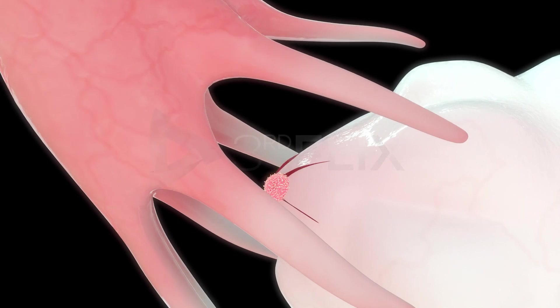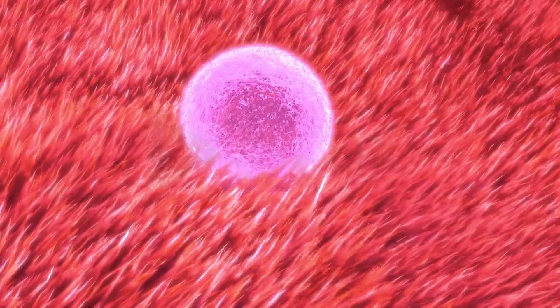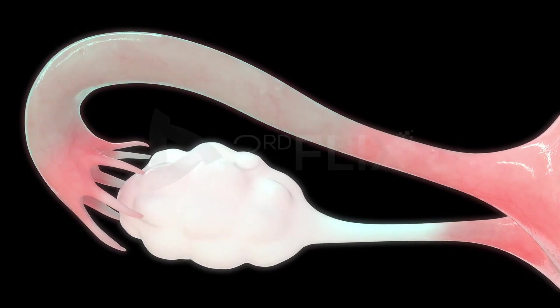The fimbriae help in the collection of the ova released from the ovary. The infundibulum leads into the wider part called the ampulla. The ampulla is the site of fertilization.